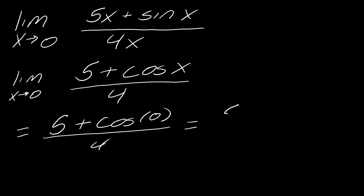I get actually, if I plug in 0 now, so I get 5 + cos(0) over 4. This will be just 5 + 1 over 4. So this is 6 over 4, which is 3 over 2. So, done. And so, that's it. That's taking the limit. So it's very handy.